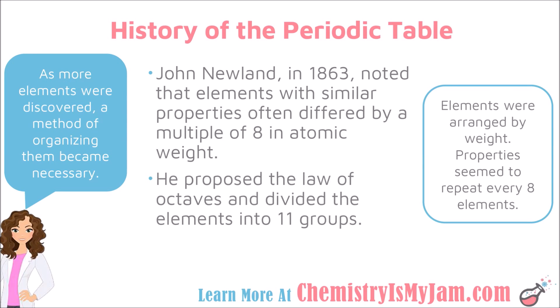One of the first attempts at the periodic table is credited to John Newlands in 1863. He arranged the elements by weight and noticed that every eight elements had similar properties, so he proposed the law of octaves, which divided the elements into 11 groups. While chemists continue to recognize the number 8 as an important number in chemistry, these 11 groups are no longer sufficient to organize all the elements we are now aware of, so the periodic table had to change.